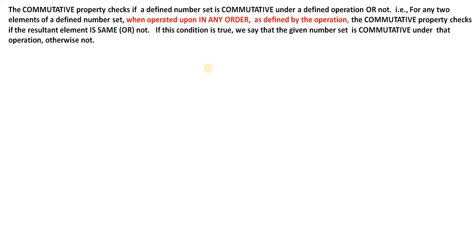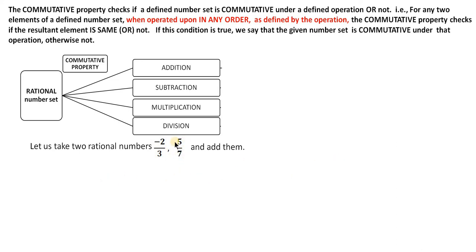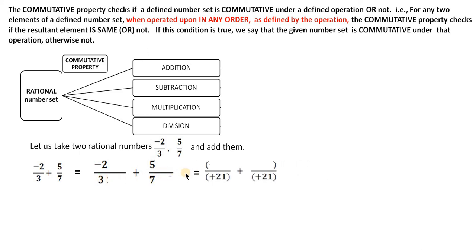The defined number set is your rational number set and the operations are all four: addition, subtraction, multiplication, and division. Let us check for addition first. Take two rational numbers: -2/3 and 5/7. Add first with second: -2/3 + 5/7. The denominators 3 and 7 are unlike, so we need LCM of 3 and 7, which is 21. Multiply -2 by 7 to get -14, and 5 by 3 to get 15.